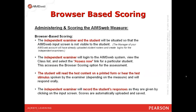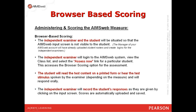For browser-based scoring, the process is simple. The independent examiner will sit across from the student, have the student read the material or listen to it orally, and then the examiner will score on a screen instead of on paper. The student completes the test as the examiner is scoring it. Once the examiner is finished, the scores are automatically loaded into AIMSLab.